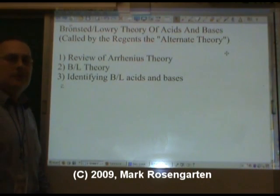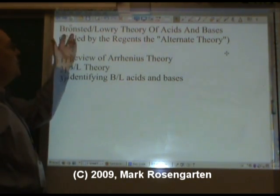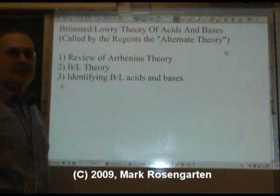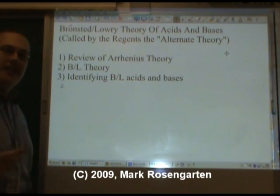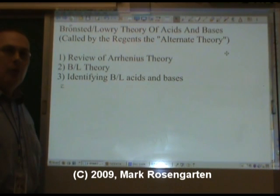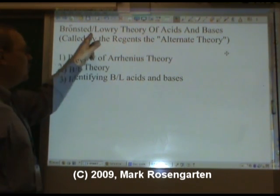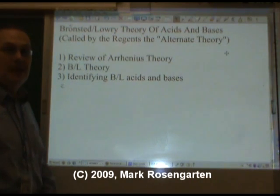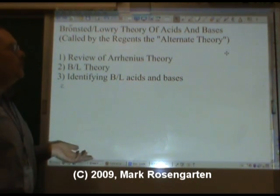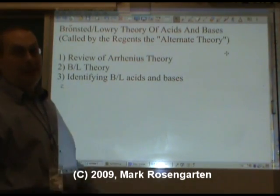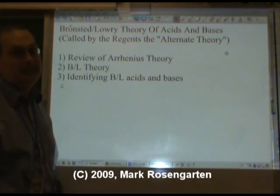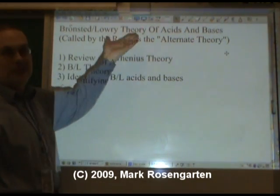What we're going to take a look at now is what's called the Brønsted-Lowry Theory of Acids and Bases. Brønsted has umlauts over that O — here's how you say an O with umlauts: you basically say E, but you mouth O. Brønsted-Lowry Theory of Acids and Bases. It's going to be referred to as the Alternate Theory of Acids and Bases, but it's really called Brønsted-Lowry.